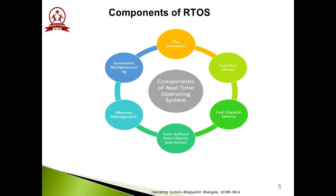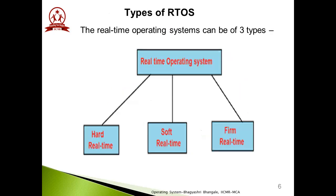The last component is user-defined data objects and classes. The RTOS uses programming languages like C and C++, which are organized according to their operations. These are the various components of RTOS. Now, what are the various types of RTOS? There are three main types: hard real-time, soft real-time, and firm real-time.